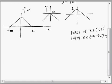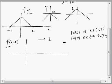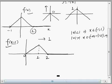Once we have the graph of f(x), we draw f(x-1). This means we shift the graph of f(x) one unit towards the right — you can read about this in the theory of transformations. So the point at -1 comes to 0, the tip at 0 comes to 1, and the point at 1 comes to 2.